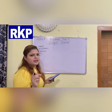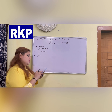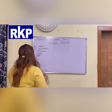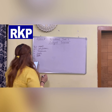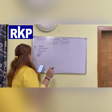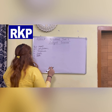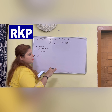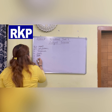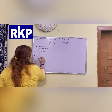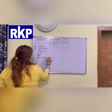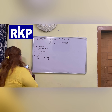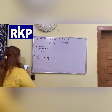Next question: plants like sugarcane, rose, and hibiscus multiply through what? Multiply means increase in number, which means reproduce. They reproduce through stem cutting. Next: the process by which living organisms produce individuals of their own kind is called reproduction.